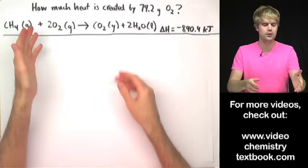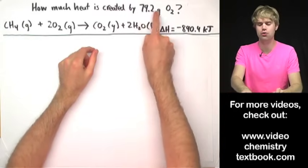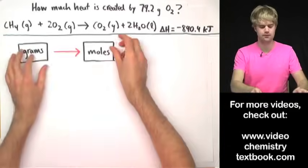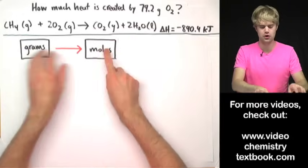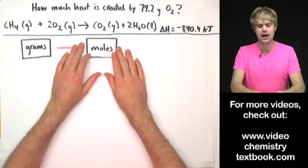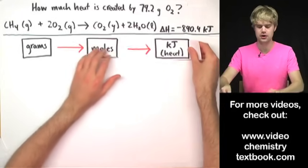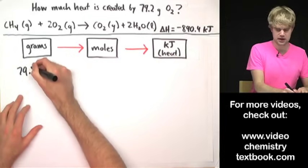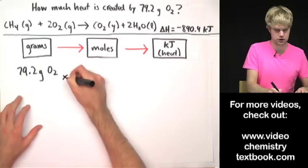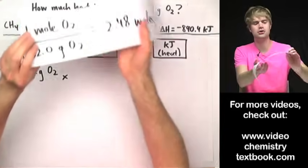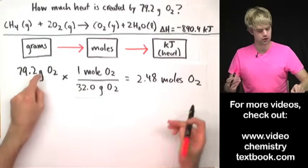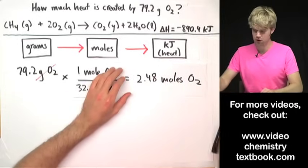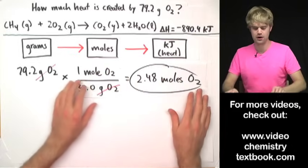Let's do another example: calculate how much heat is created by 79.2 grams of oxygen. The steps are the same — first go from grams of O2 to moles of O2 using a molar mass, then take moles of O2 and use that to get kilojoules of heat. So: 79.2 grams O2 multiplied by the molecular weight conversion factor, grams of O2 cancels out, and we get 2.48 moles of O2.